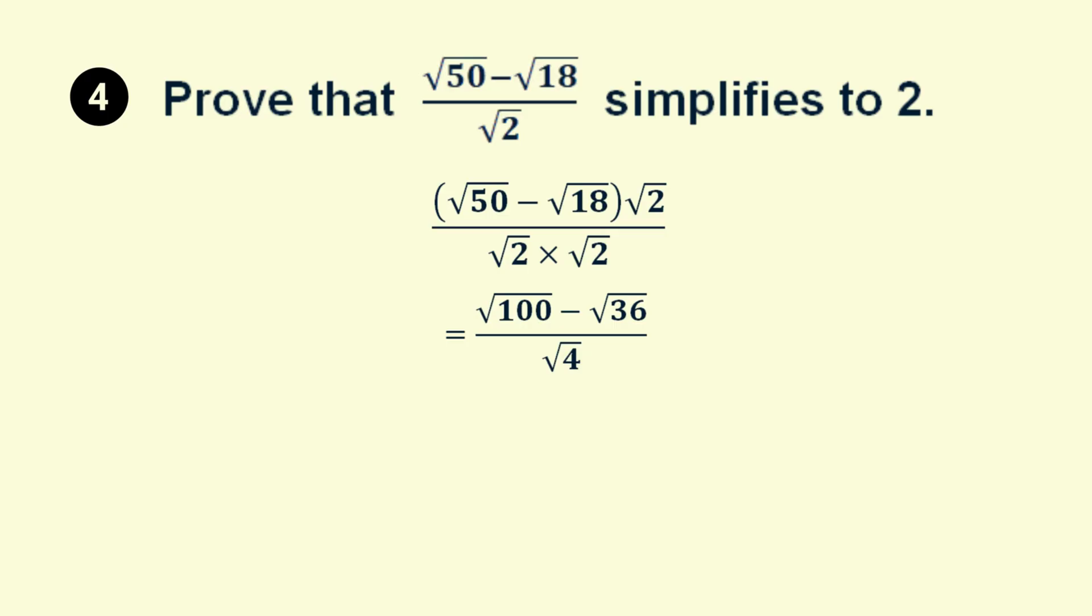The square root of 100 is 10, root 36 is 6, and root 4 is 2. 10 minus 6 is 4, and 4 divided by 2 is 2. So the proof is complete.